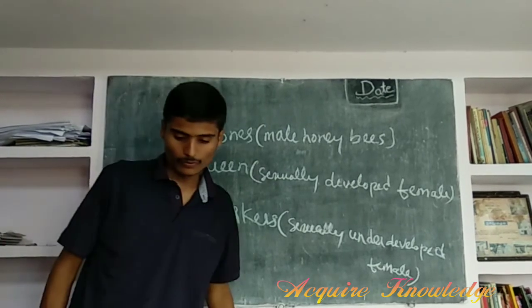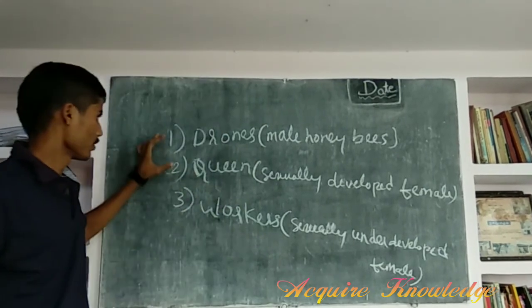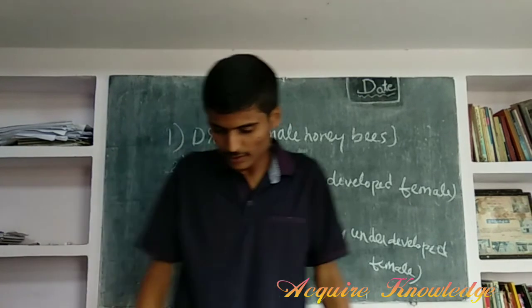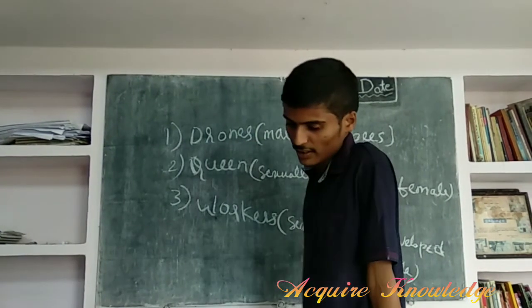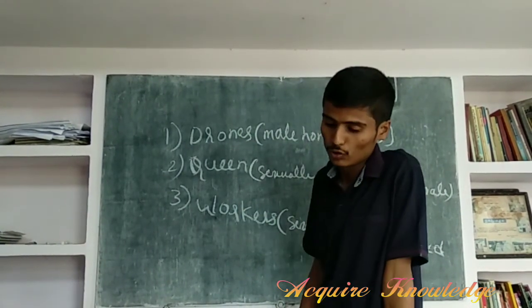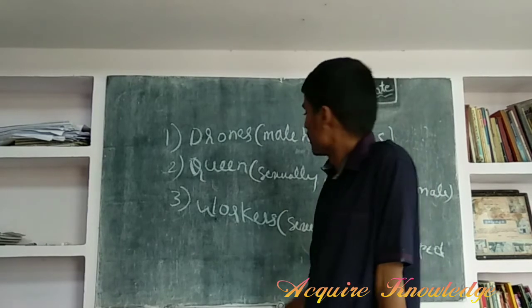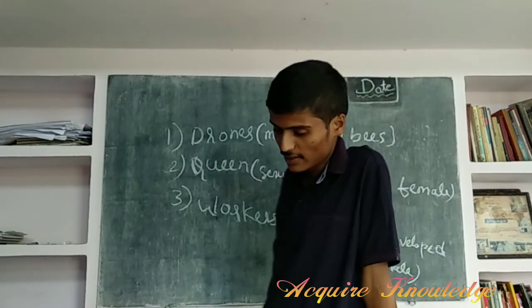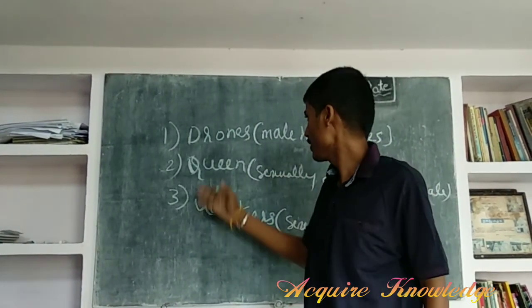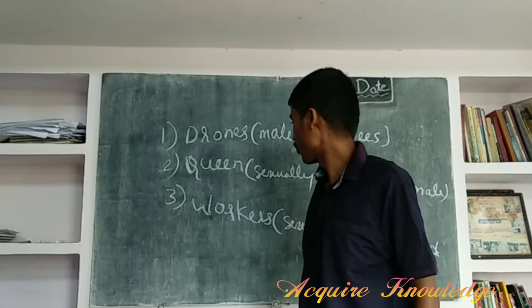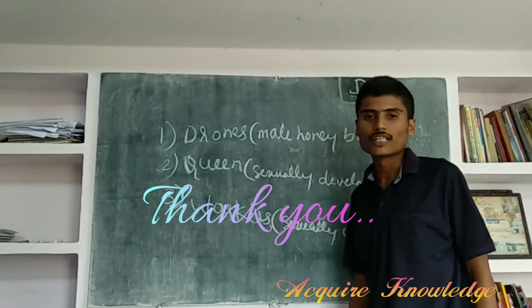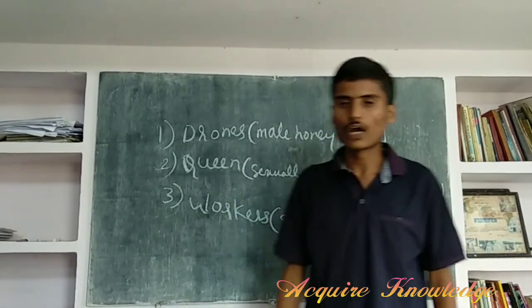These are all the works of drones, queens, and workers. The average queen lives two to five years. Thank you everyone.